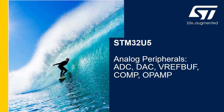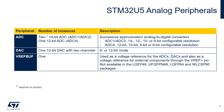Hello and welcome to this presentation which introduces the analog peripherals present in the STM32U5. STM32U5 products integrate up to two 14-bit ADCs, one 12-bit ADC, two 12-bit DACs, a VREF voltage buffer, two comparators and two op-amps. Refer to the product data sheets for availability of analog peripherals.